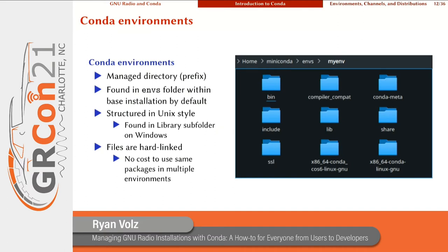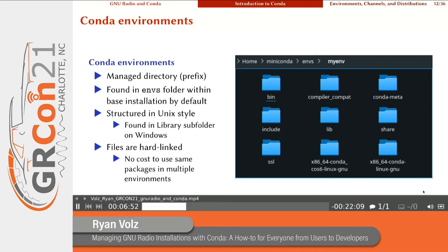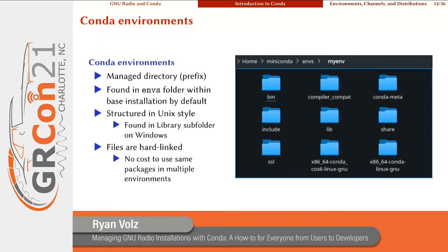First up is defining a conda environment. An environment is a managed directory — sometimes we think of these as an installation prefix — and they are usually found in the `envs` folder within your base installation by default, but you can create environments at any location. They're structured in Unix style with standard `bin`, `lib`, and `include` paths. On Windows, those Unix-style paths are found in a `Library` subfolder. And these files are hard-linked, so there's no cost to use the same packages within multiple environments — no extra disk space used.